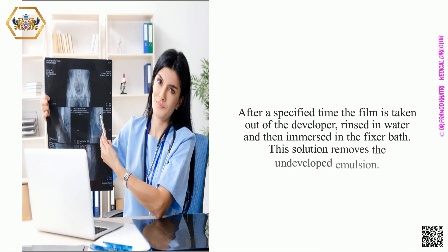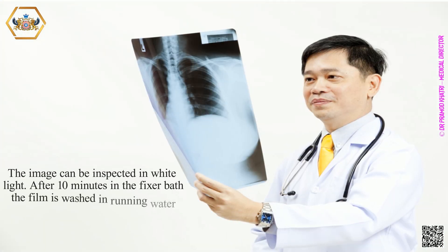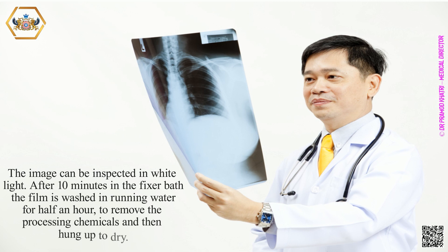After a specified time the film is taken out of the developer, rinsed in water, and then immersed in the fixer bath. This solution removes the undeveloped emulsion and the image can be inspected in white light. After 10 minutes in the fixer bath, the film is washed in running water for half an hour to remove the processing chemicals and then hung up to dry.